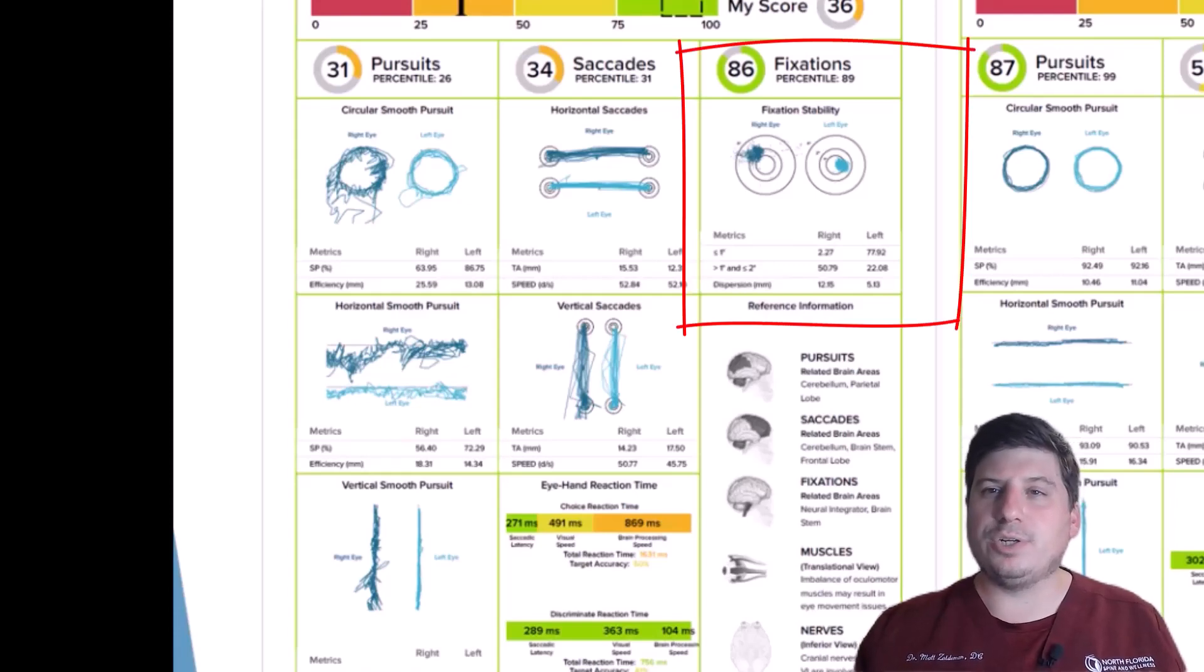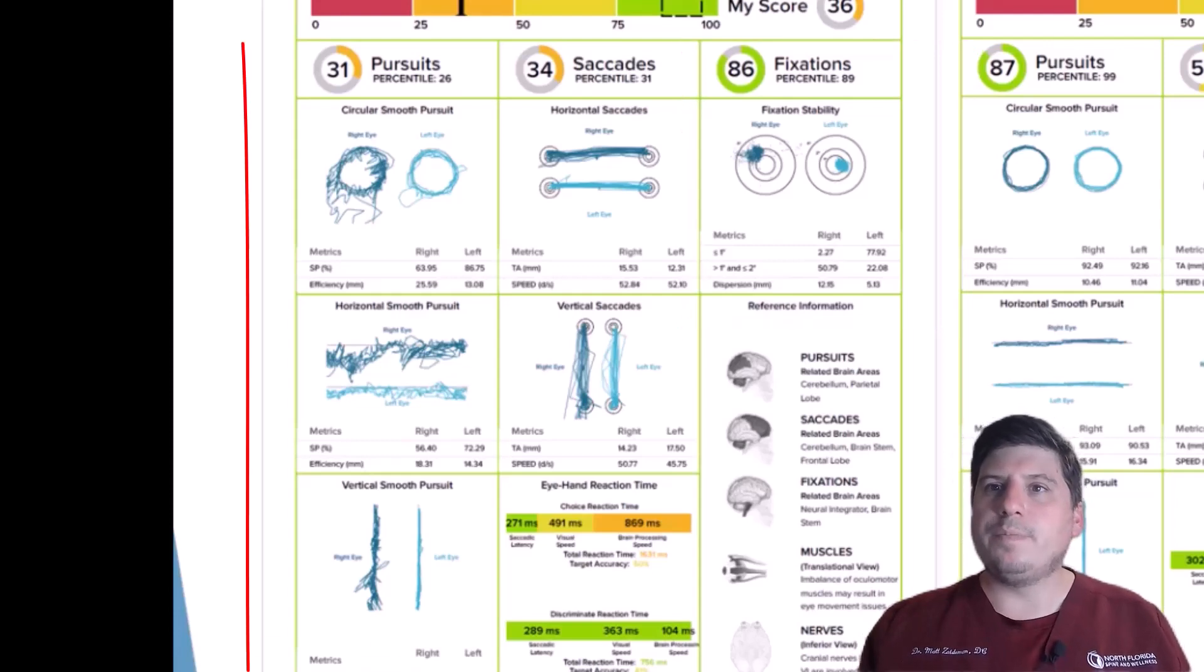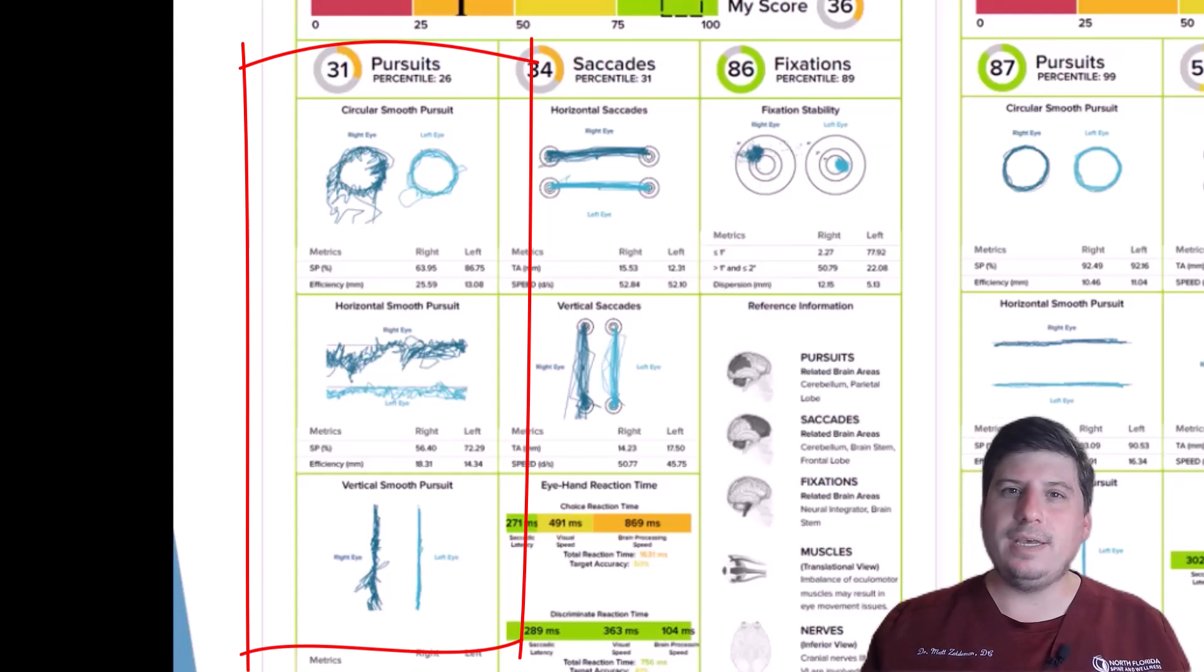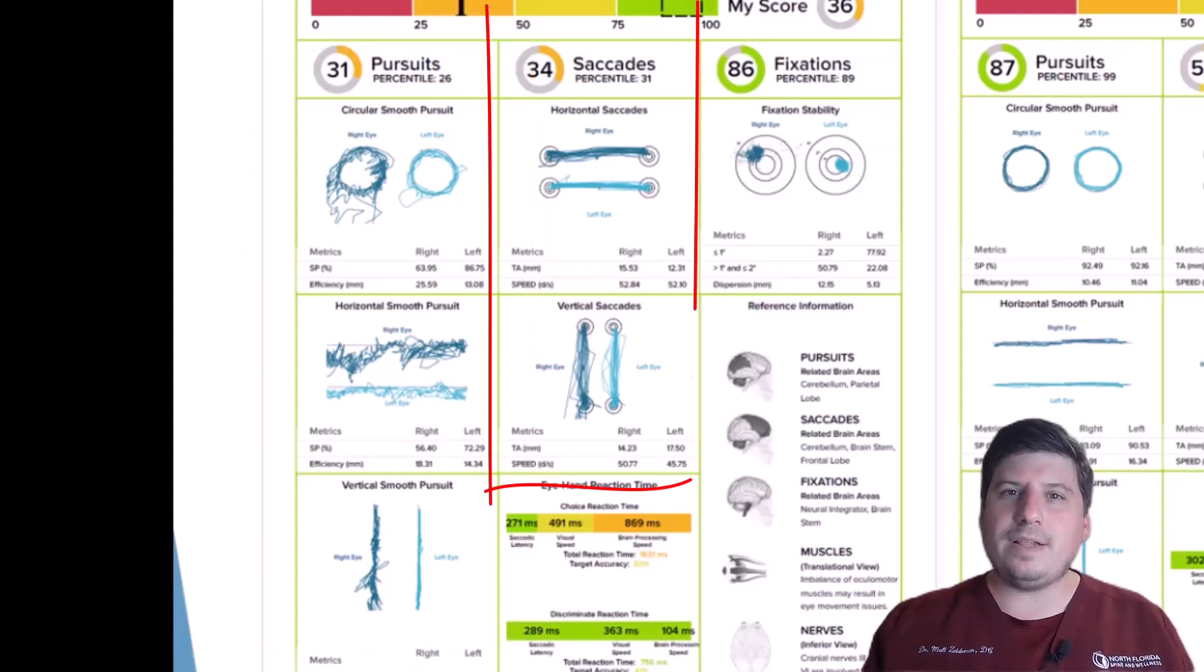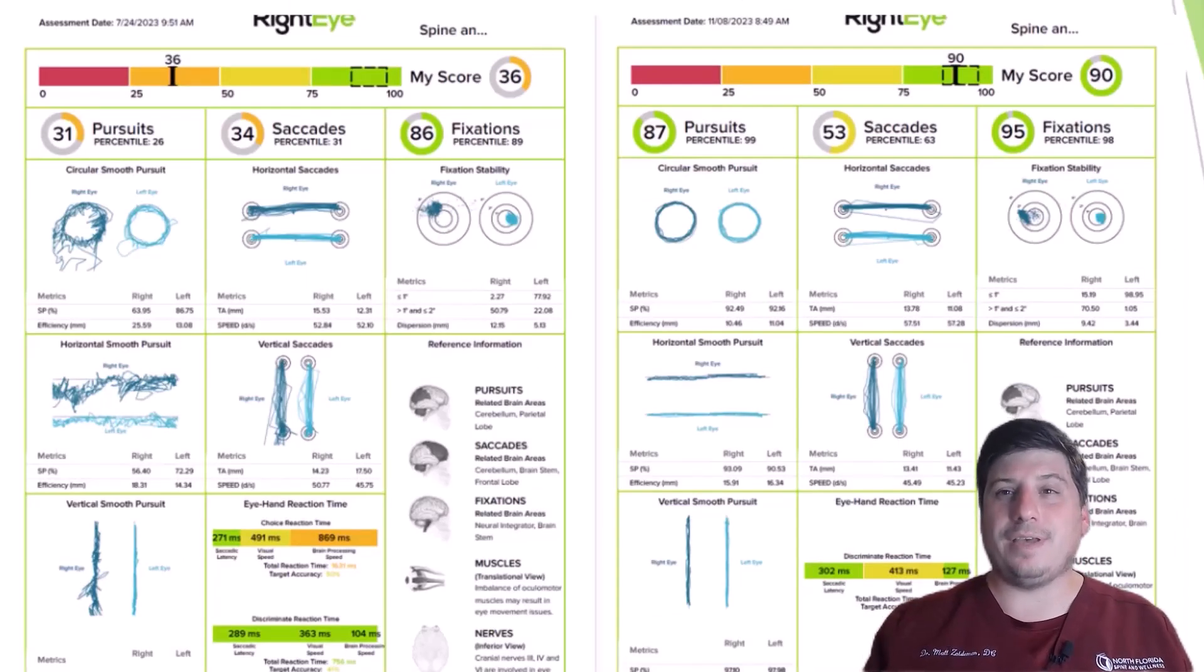So you got fixations which are controlled by the brain stem. This is where primitive reflexes emerge from. Pursuits are controlled by the cerebellum which is balance and coordination typically, and the parietal lobe which is more sensory processing. And then finally you have saccades which are controlled by both the cerebellum and the frontal lobe which the frontal lobe is responsible for executive function, cognitive function, and also more advanced emotional regulation.